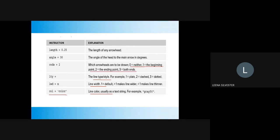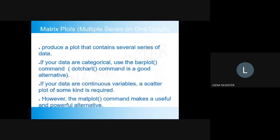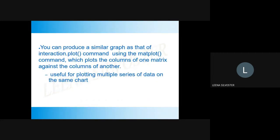For multiple series, several series of data can be plotted on a single graph. If the data are categorical, you can use barplot() or dotchart(). If your data are continuous variables, you can plot scatter plots or use the matplot() command. For categorical data we can plot bar chart and dot chart; for continuous variables you can use scatter and matplot. The matplot() command plots the columns of one matrix against the columns of another.